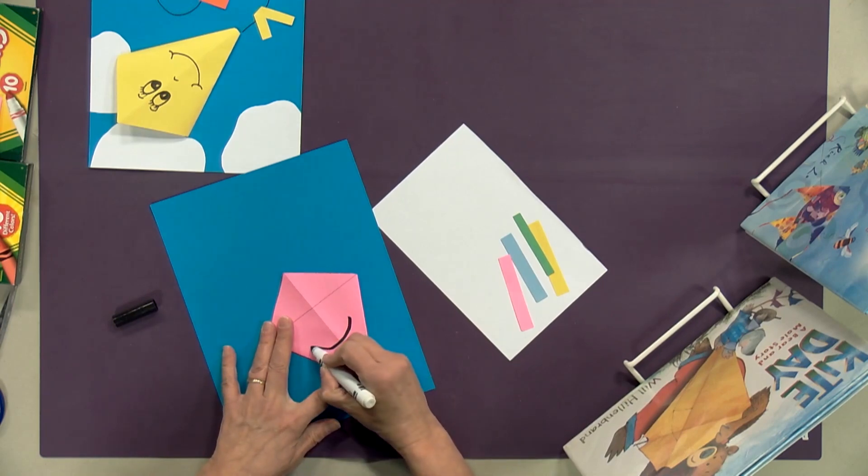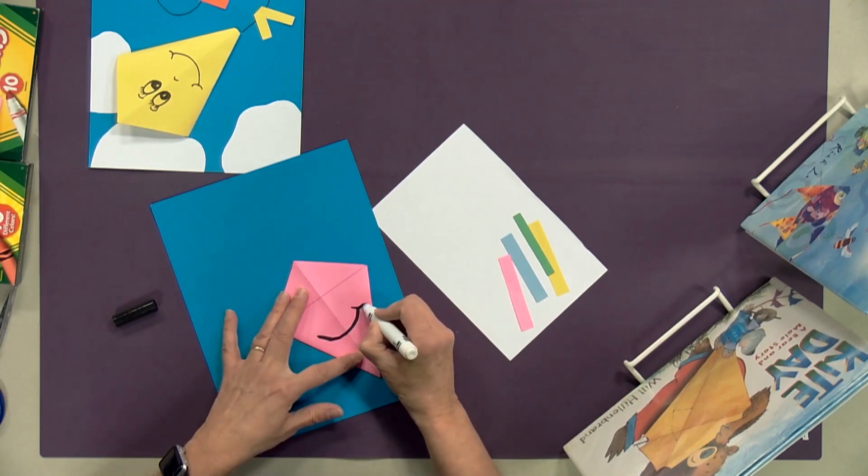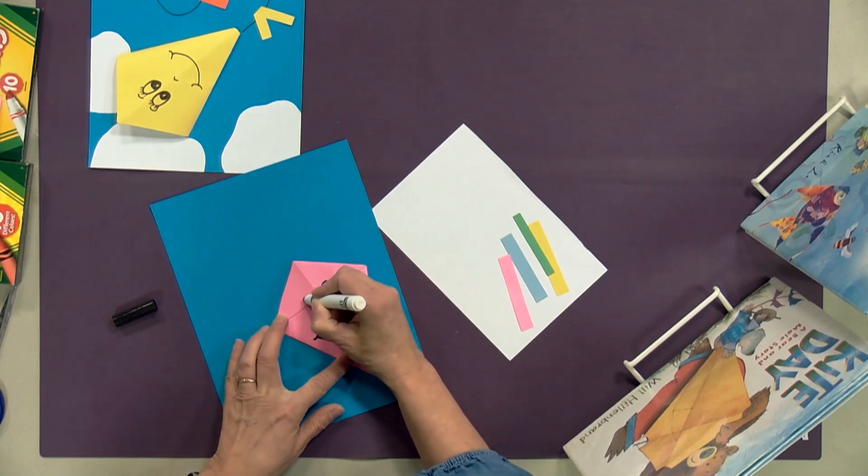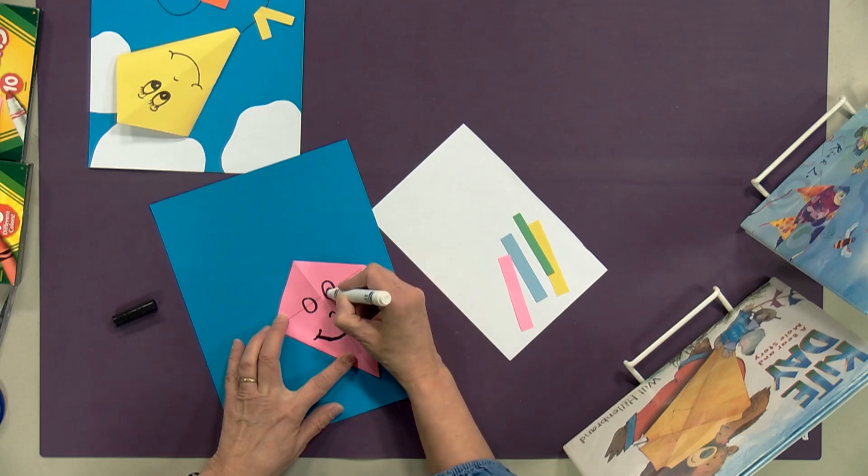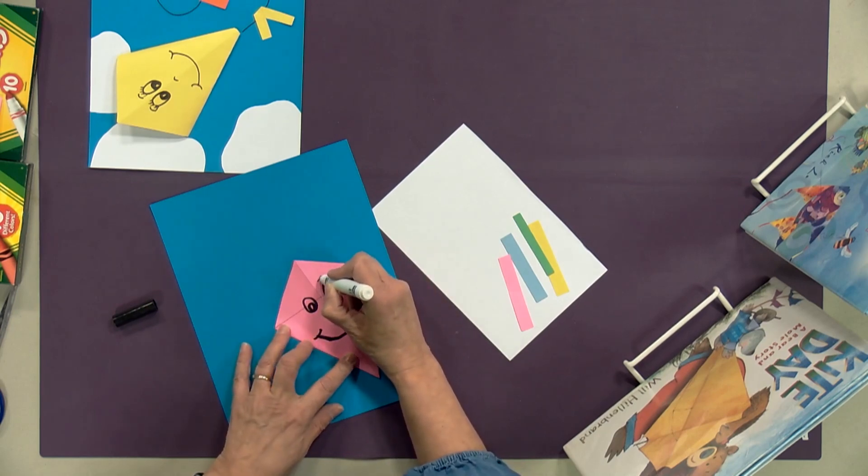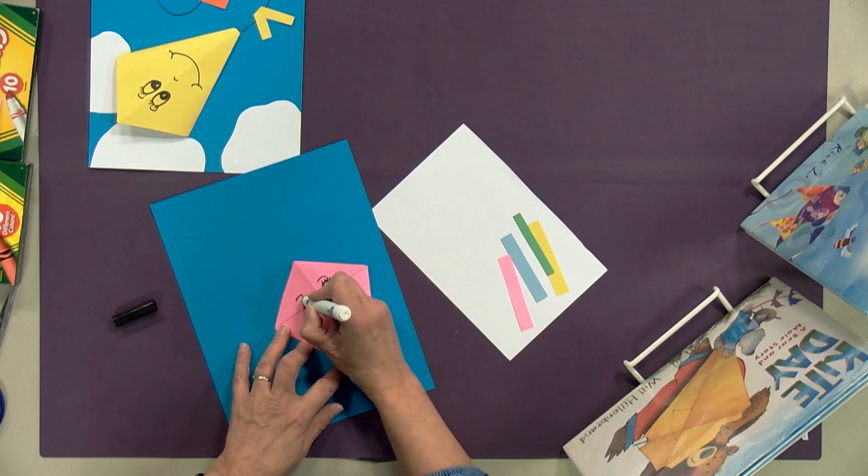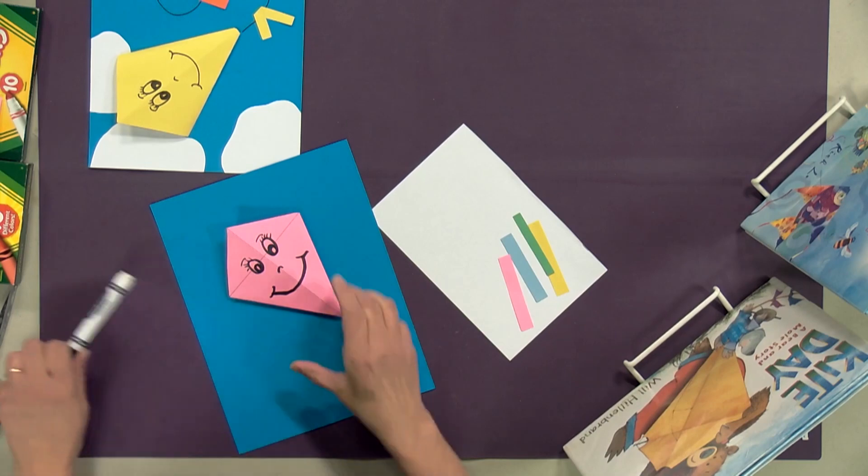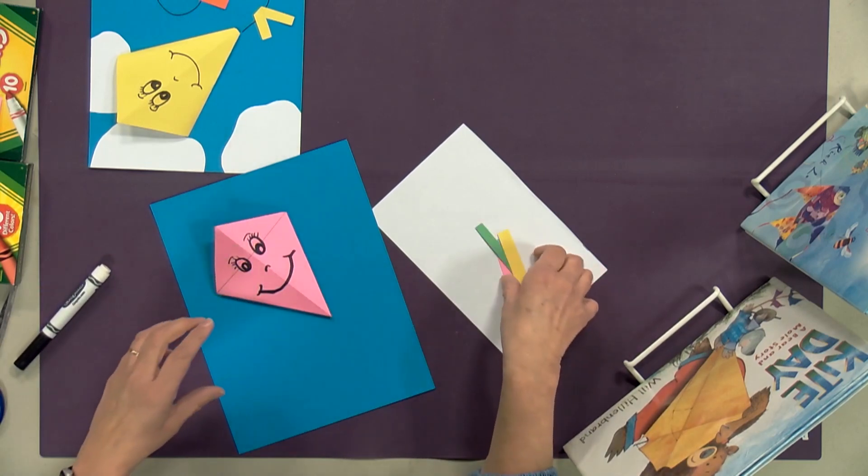Now before we do any gluing here, we're going to want to make our face. Take your black marker, and if you don't want to make a face, don't make a face, but it makes it cuter I think if you put some little eyeballs and nose and mouth. I'm going to color this part in, and if I want to do little eyebrows and some eyelashes. We have our cute little face on our kite today.